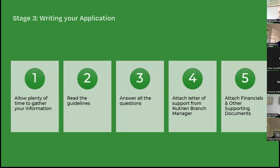Writing the application: you have about two weeks to finish. Make sure you're gathering all your information now. Do read the guidelines — the more you align yourself to meaningful community projects, vibrant communities and strong outcomes, the easier it is for us to see alignment. Answer all the questions. Please attach a letter of support from the Nutrient branch manager — an email from the branch manager is fine. Any other letters of support from community members are also highly valued.